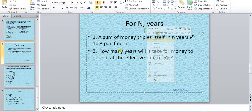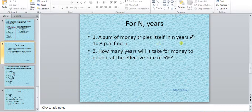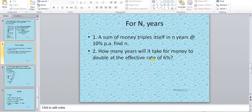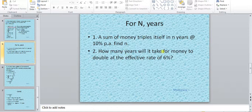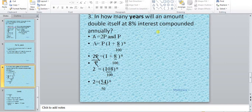A sum of money trebles itself in n years at 10% per annum. Find n. In how many years will it take for money to double, become double of it? It doesn't matter if it is triple, three times, two times, four times, five times. The method of calculating n does not change. Only the value of amount is changed.